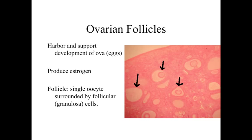When we take a look at an ovarian follicle, we're going to see a single oocyte — an enlarged cell with a fairly euchromatic appearing nucleus and a distinct nucleolus — surrounded by what are referred to as either follicular cells or granulosa cells. These are much smaller, more basophilic staining cells immediately surrounding and supporting the egg as it's developing.